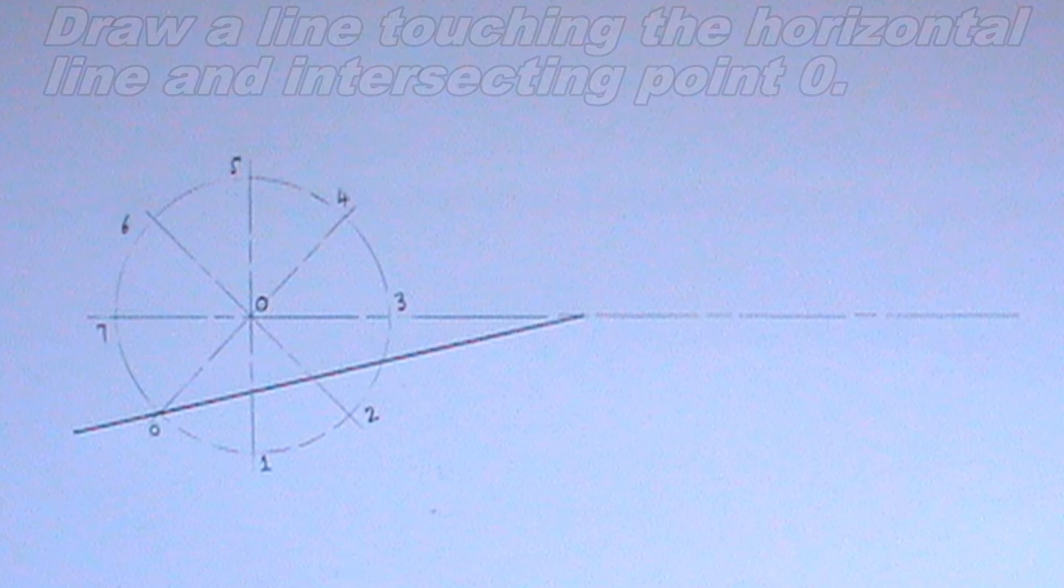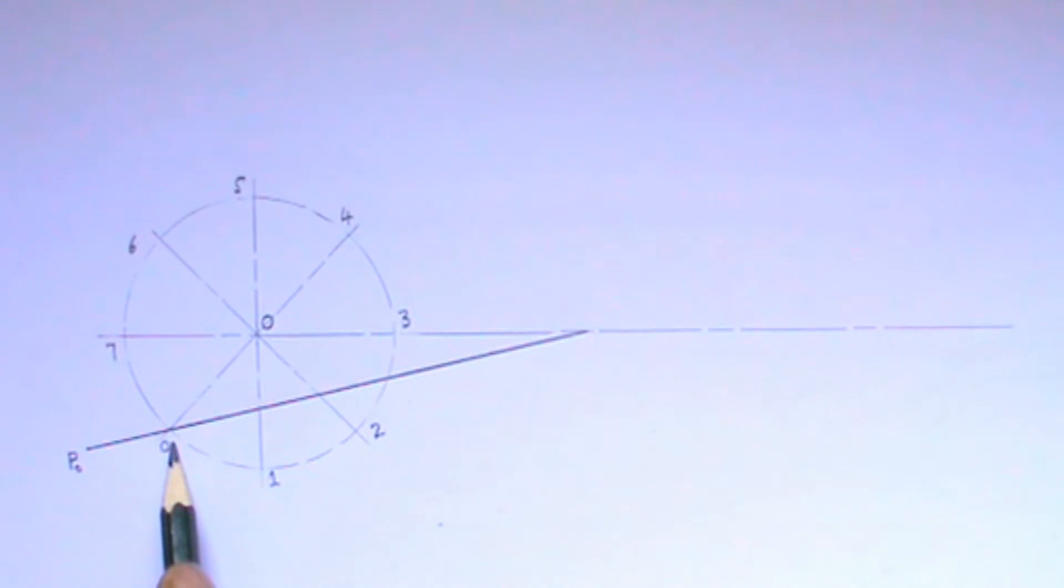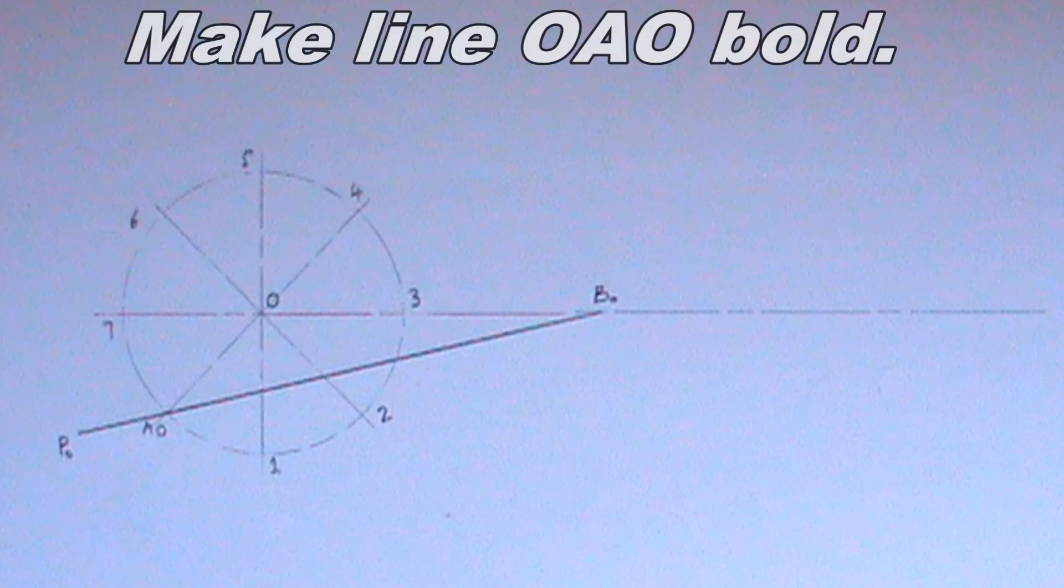I will label the end of the line P0, the point where the line intersects point 0 A, and the point where the line intersects the horizontal line B0. I will make line OA bold.